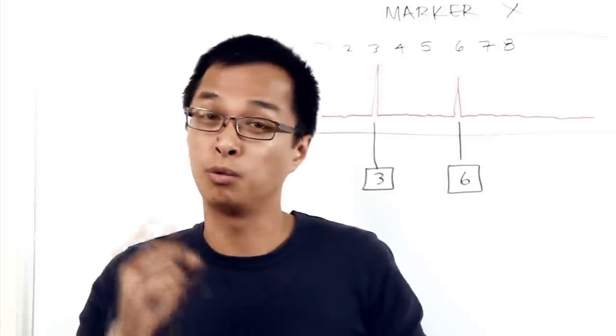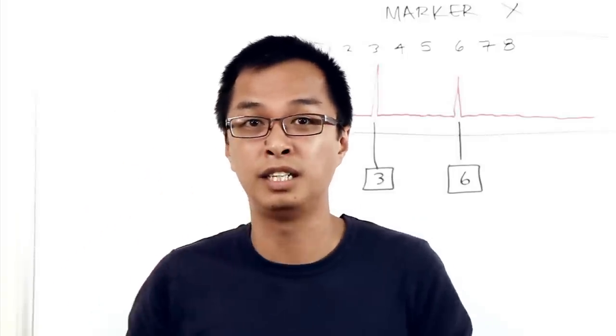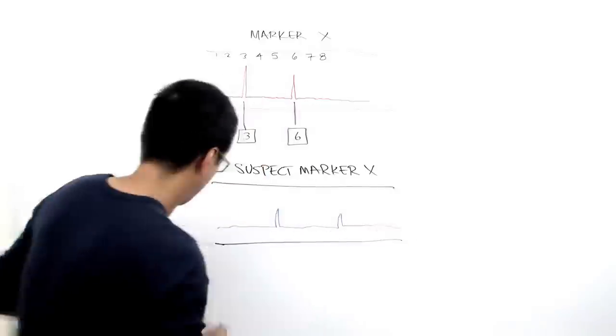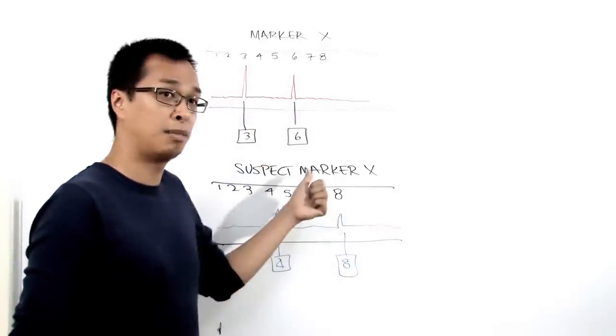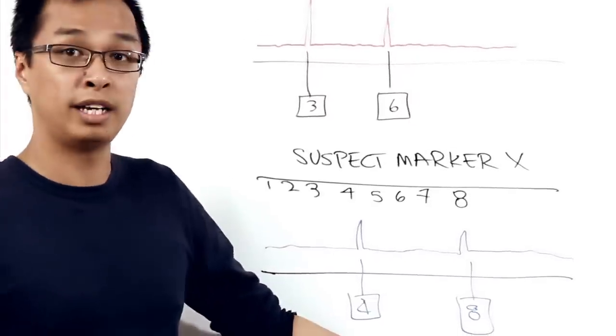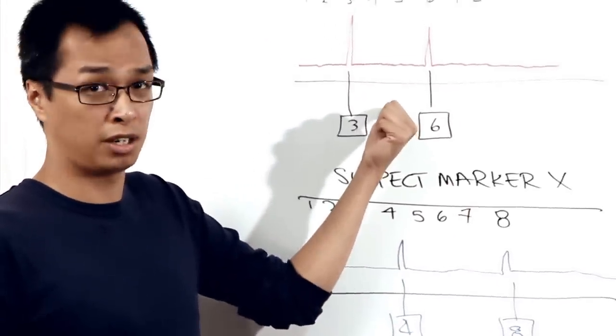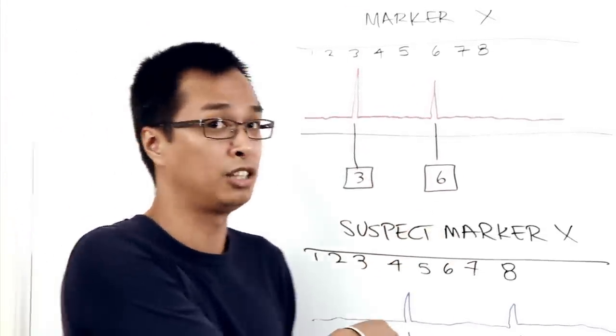So let's say we take a sample from the suspect by taking a cheek swab and testing the cells in his saliva to get DNA profiled at marker X. Let's say he turns out to be a 4 and an 8 because the blood on the shirt at marker X is a 3 and a 6, and he can't contribute what he doesn't have.